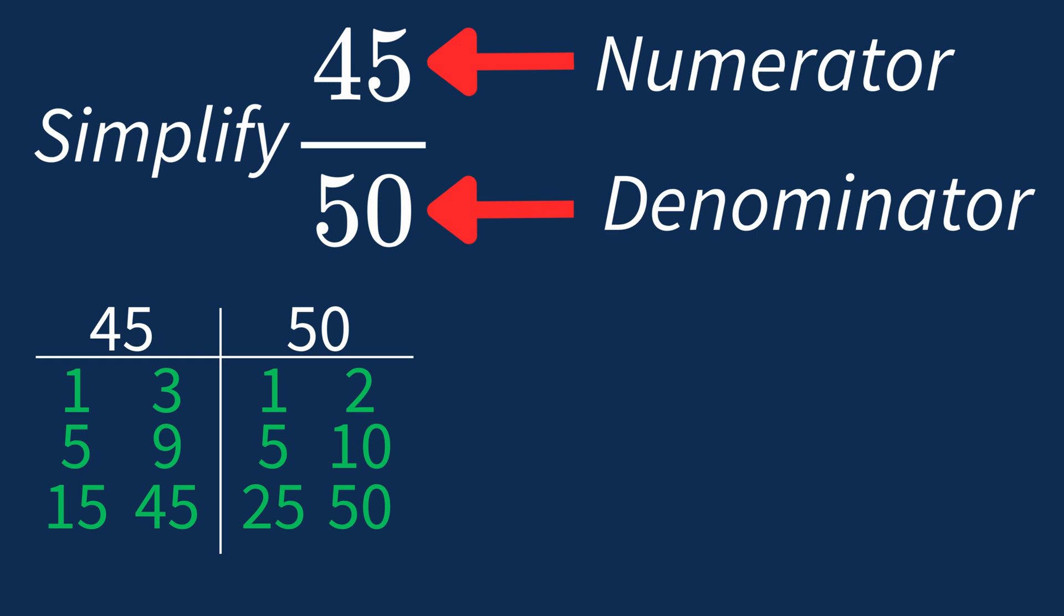So the largest common factor between 45 and 50 is 5. This means we can divide both the numerator and denominator by 5 to simplify the fraction.